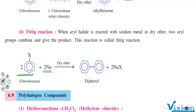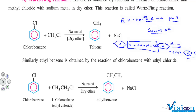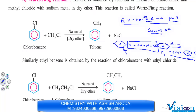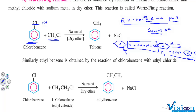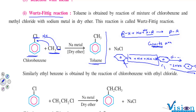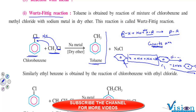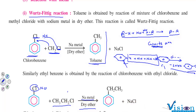When both haloalkanes react with sodium and dry ether, it is the Wurtz reaction. When both haloarenes react, it is the Fittig reaction. When one haloarene and one haloalkane react with sodium and dry ether, NaCl leaves and a CH₃ group attaches to the ring, giving toluene — this is known as the Wurtz-Fittig reaction. Similarly, reacting chlorobenzene with ethyl chloride and sodium in dry ether gives ethylbenzene.